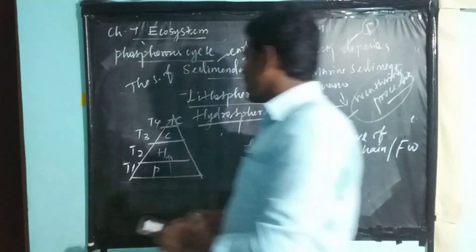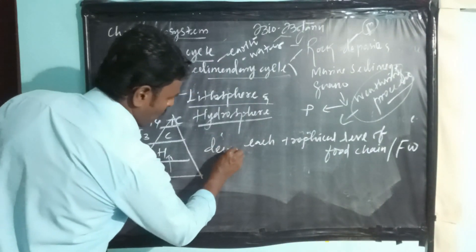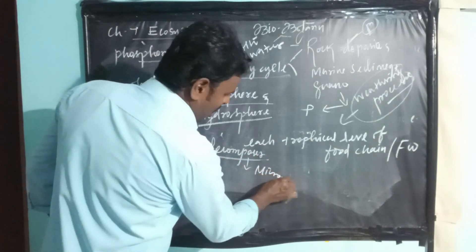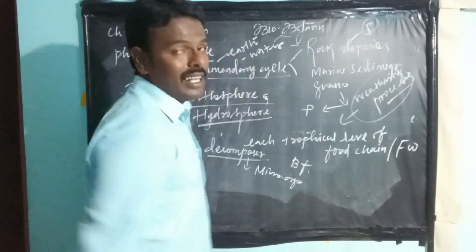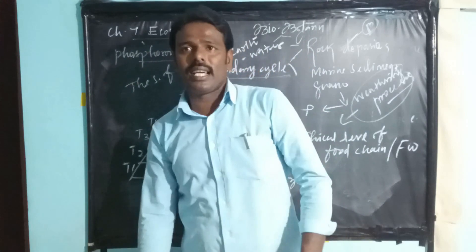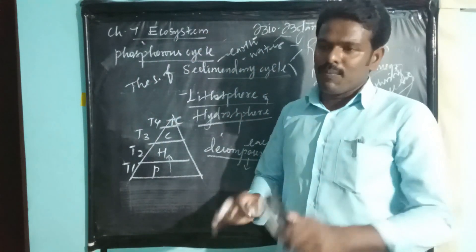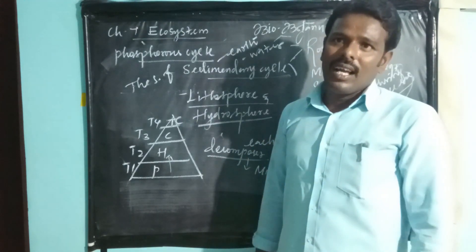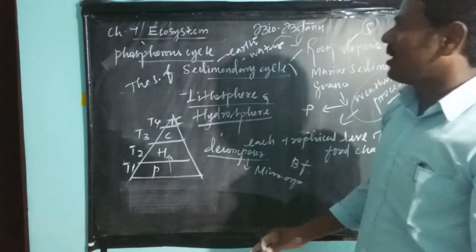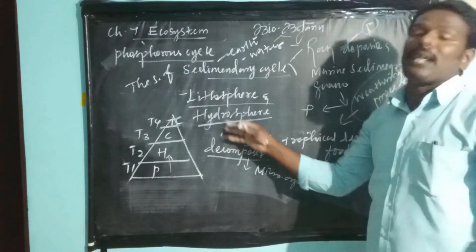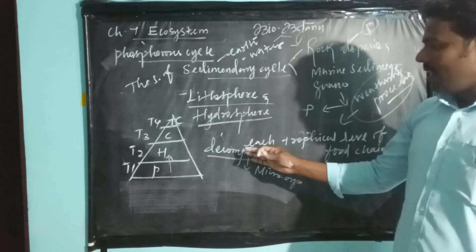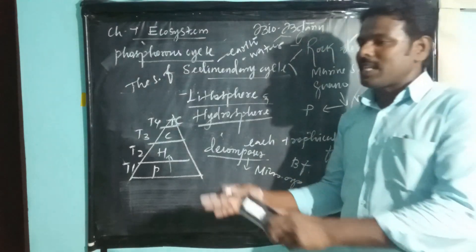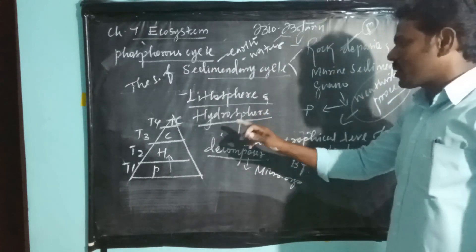Finally, these organisms die and are decomposed by the actions of decomposers — microorganisms like bacteria, fungi, and other microbes. After that, phosphorus is released and goes back into the lithosphere and hydrosphere through the decomposition process.